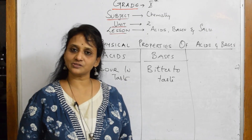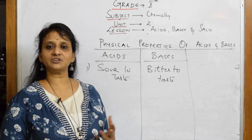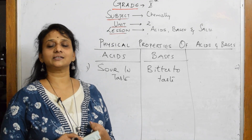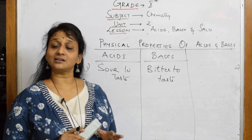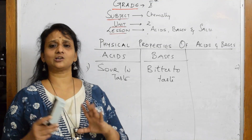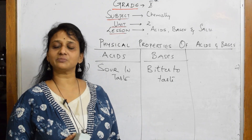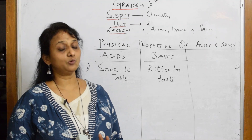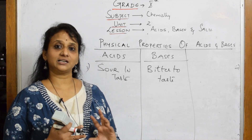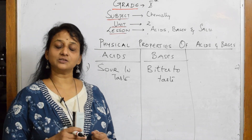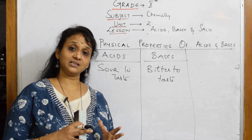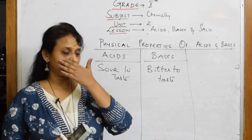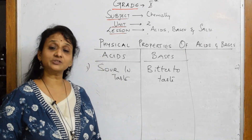To sum up: acids we are using include citric acid, carbonic acid, sulfuric acid, hydrochloric acid, and tartaric acid. Bases include magnesium hydroxide, calcium hydroxide, ammonium hydroxide, and ammonia. Salts include bleaching powder, washing soda, baking soda, baking powder, and sodium chloride — so many are there.